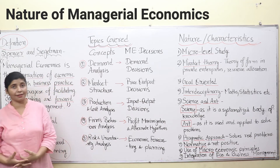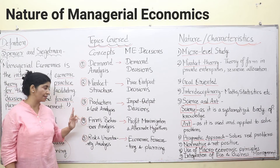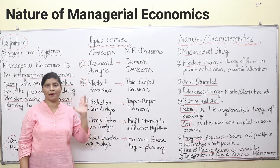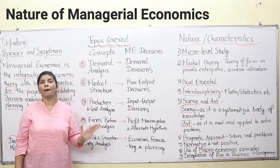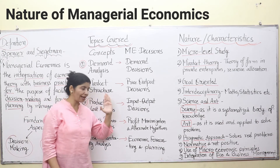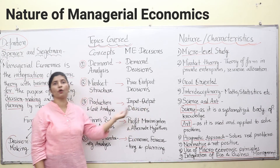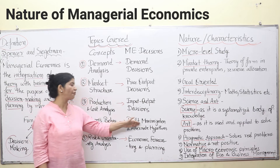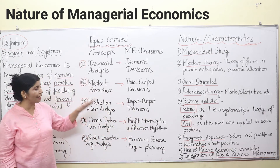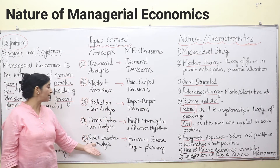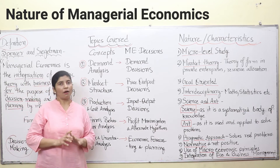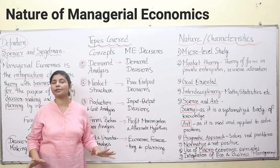Next, firm behavior analysis — how firms behave — that is, the producer's equilibrium. If the video is on our microeconomics playlist, you can see it there. Profit maximization is the basic motive of every business, and producer's equilibrium occurs at the level of maximum profit. So we study profit maximization and alternative hypotheses with the help of microeconomic concepts.